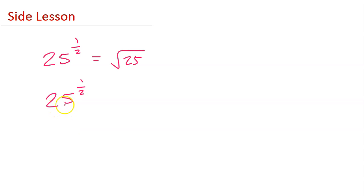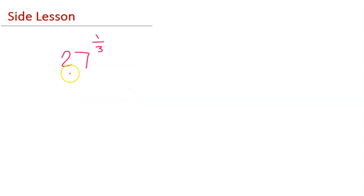So if you see 25 to the 1 half power, you think square root and you know the answer is 5. With that in mind, what do you think 27 to the 1 third power is equal to?